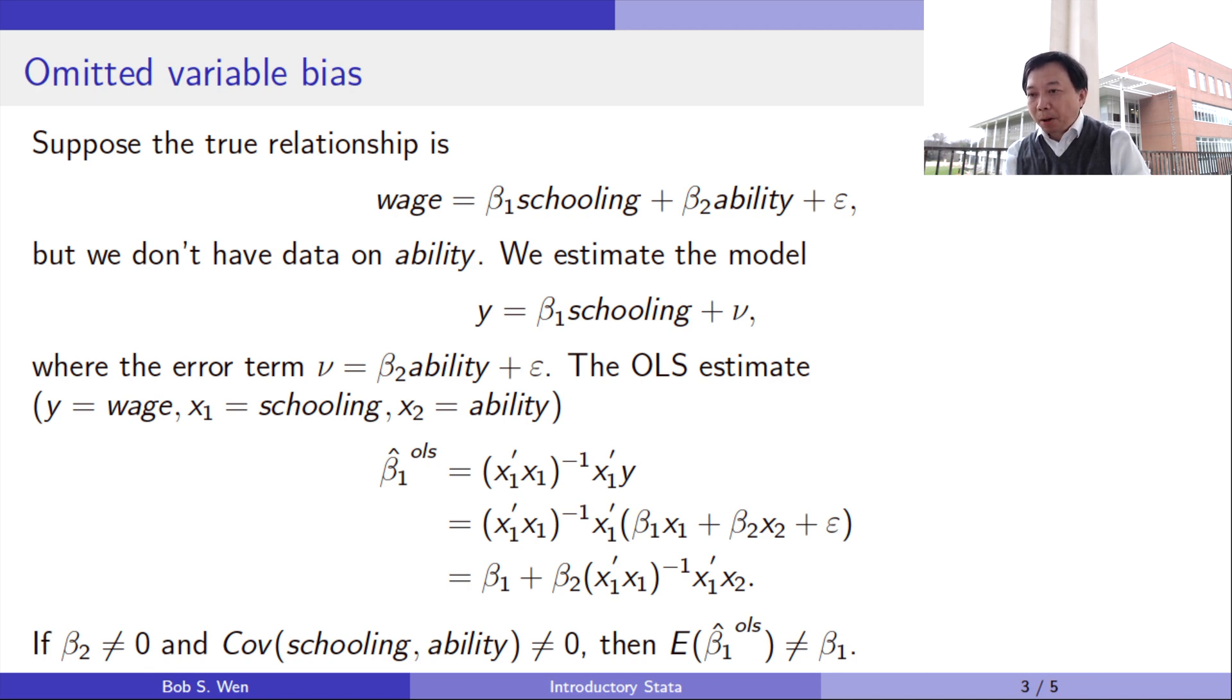If the ability is positively related to both schooling and wage, then the OLS estimate of beta 1 is overbiased. The effect of schooling on the wage is overestimated.